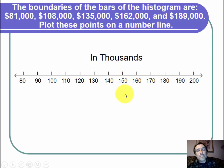Now I just have to plot these points. Let's start with 81,000. Here's 80. 81 is just a little bit after that, so I'm going to plot the 81 right there in thousands.